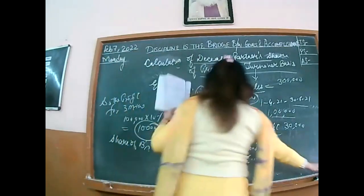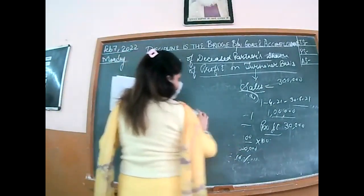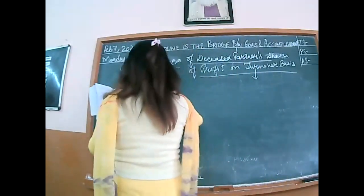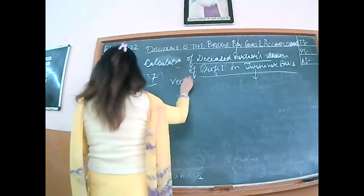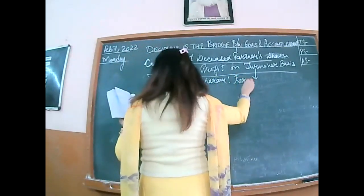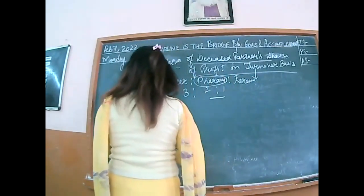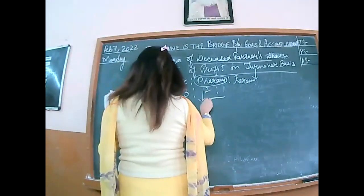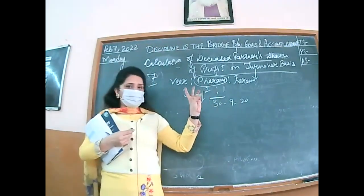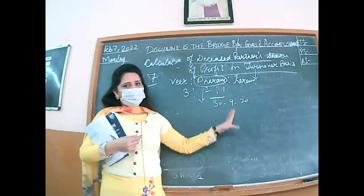Now Example 7. We have 3 partners: Veer, Dharam, and Karam, sharing in the ratio 3:2:1. Dharam died, and the date of death is 30th September. Accounts close on 31st March, so from April to September — 6 months. We need to record from the date of death and the opening of the year; with this comparison, calculate the time period for which the partner was with the firm.